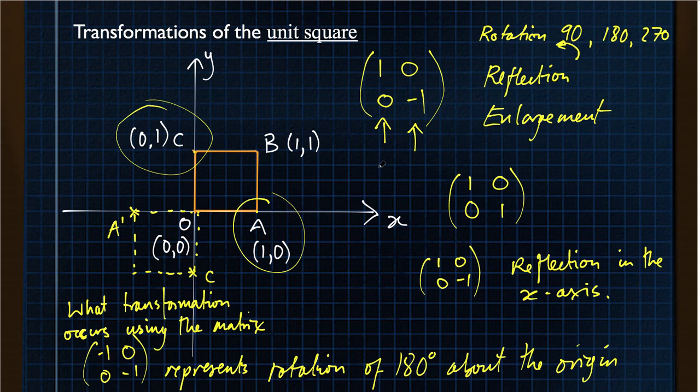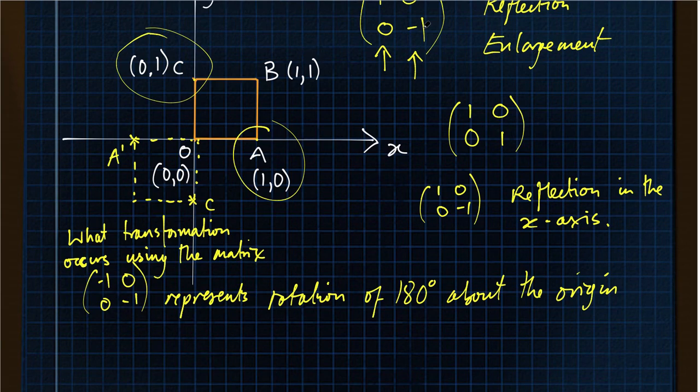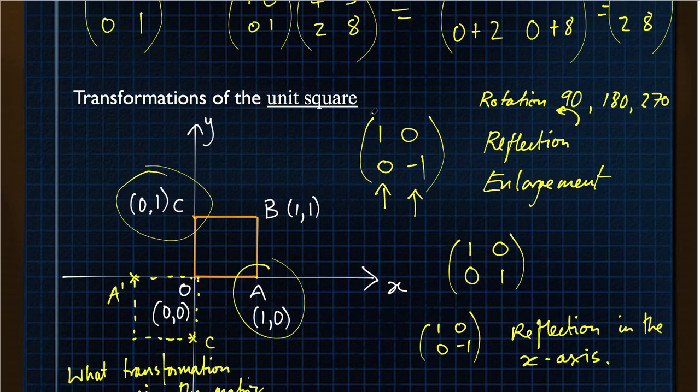You can always use this method to work out any of the transformations you'll be looking at in the exam that you'd be expected to recognize. Key point is to remember that because we write them as vectors from zero, it's this bit that represents point A and that bit that represents point C. We don't look at the rows, we look just at the columns for using this method.